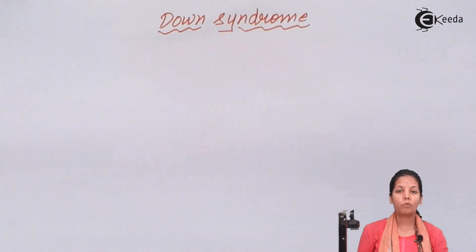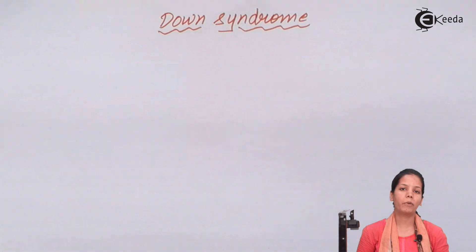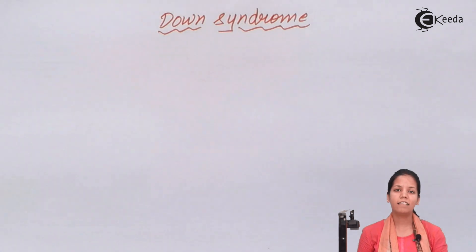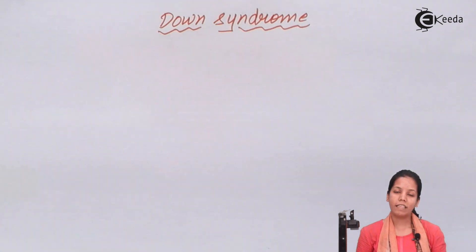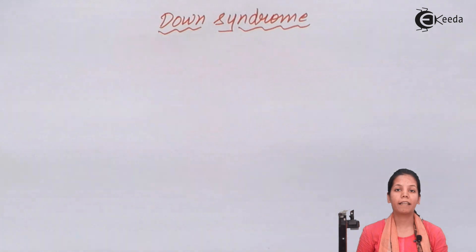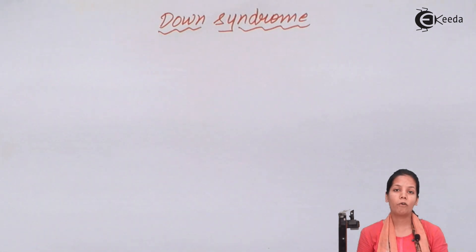Down syndrome is one of the disorders in which the 21st chromosome has an extra chromosome, so there are three chromosomes total at the 21st position. That is the reason it is also called Trisomy 21. This individual will not have 46 chromosomes inside their single cell, but will have an extra one, leading to a total of 47 chromosomes. This unequal distribution brings a lot of problems — both genetic as well as physical.